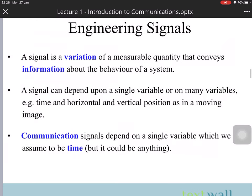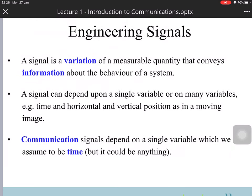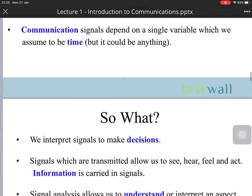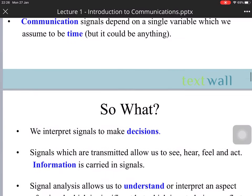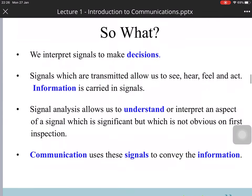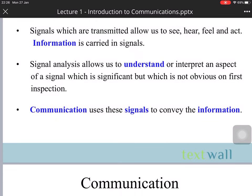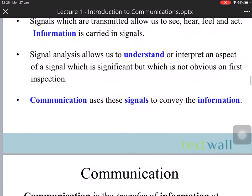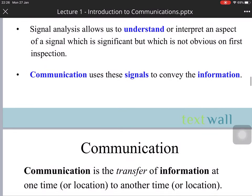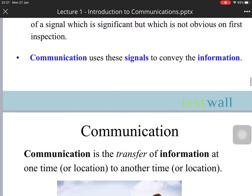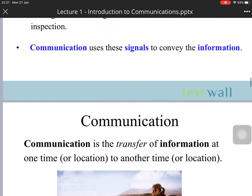A signal is a variation of measurable quantities that conveys information about the behavior of a system. The signal can depend on a single variable or many variables — time, horizontal, or vertical position of a moving image. The communication signal depends on a single variable, which we assume to be time. Signal analysis allows us to understand and interpret aspects of the signal which are significant but not obvious at first inspection.